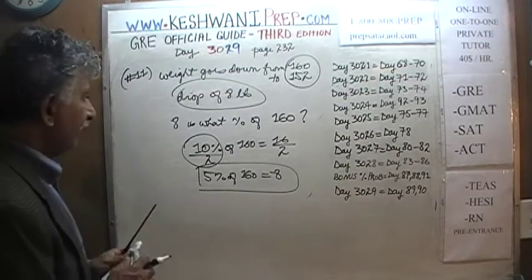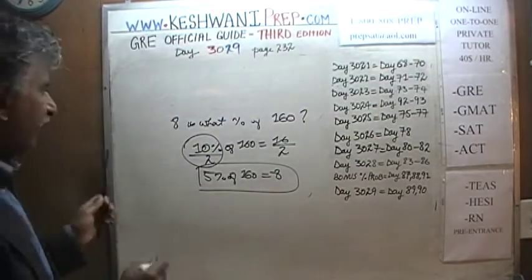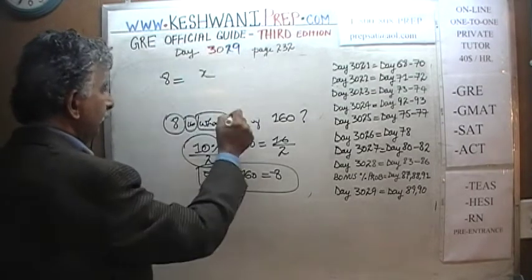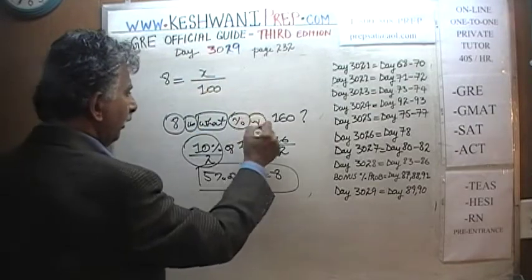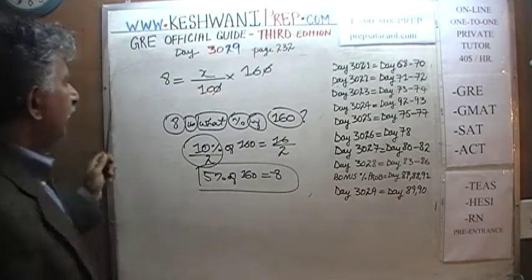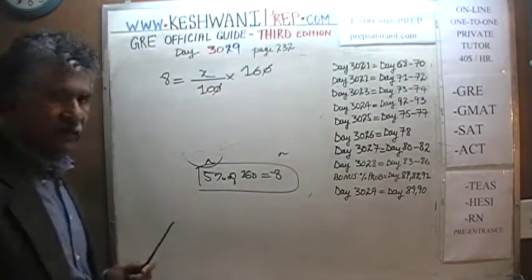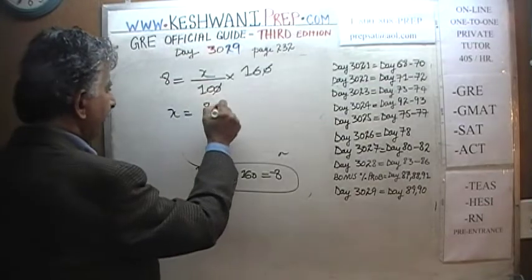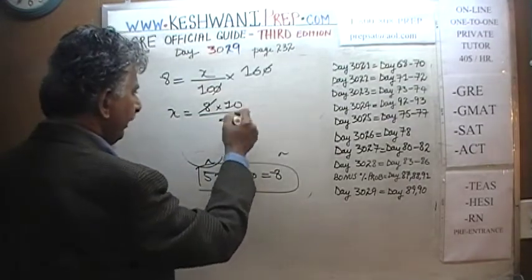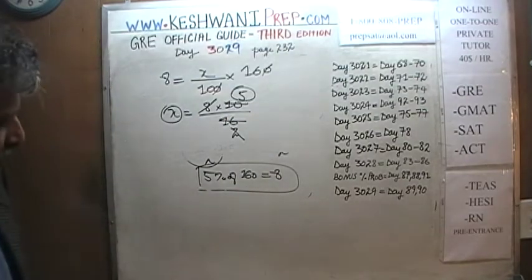Or we can do it the classical way by setting up the equation: 8 equals x over 100 times 160. Divide by 10 to simplify, isolate x: x equals 8 times 10 over 16. Divide top and bottom by 8 to get 10 over 2, then divide by 2 to get x equals 5. So 5% of 160 is 8 pounds — the person dropped their weight by 5 percentage points.